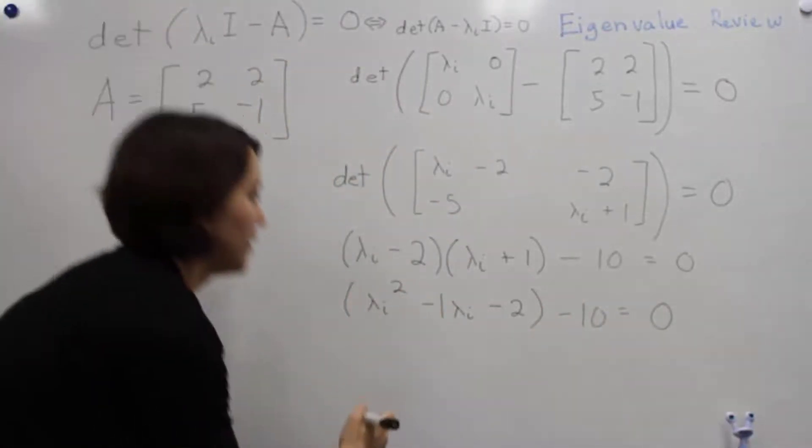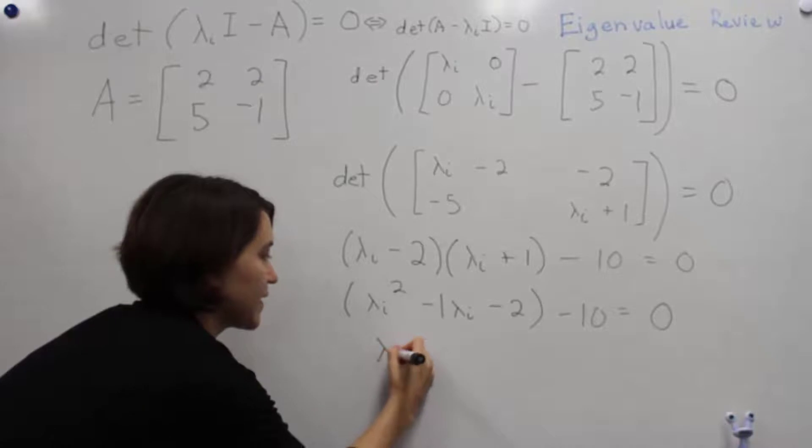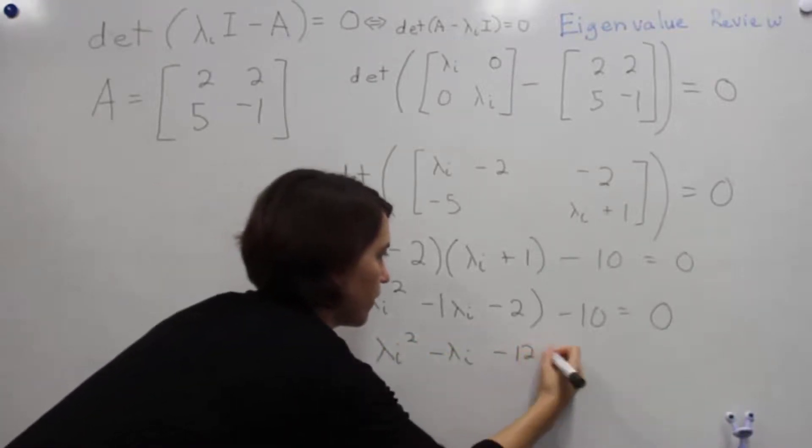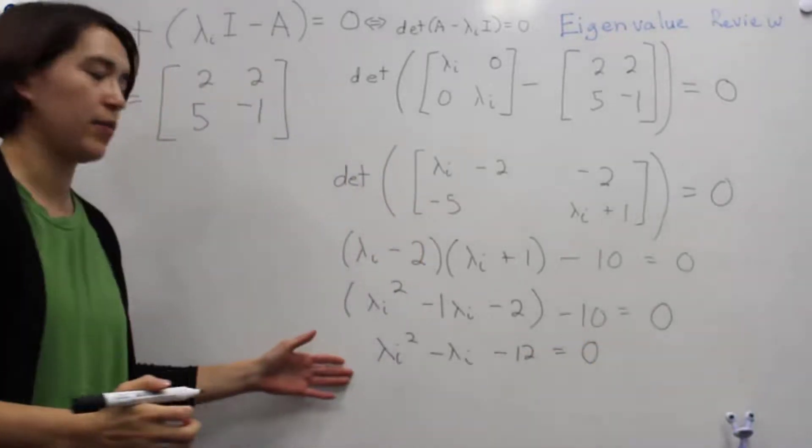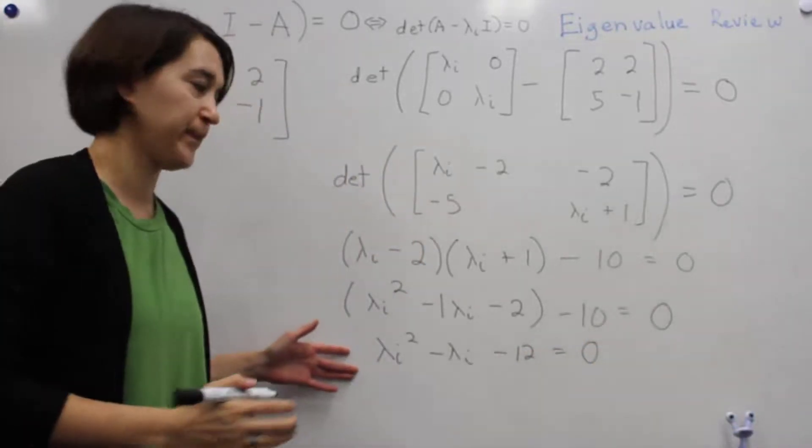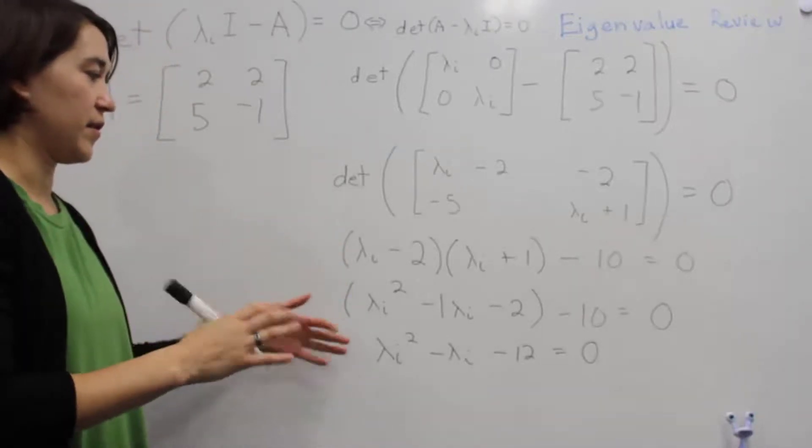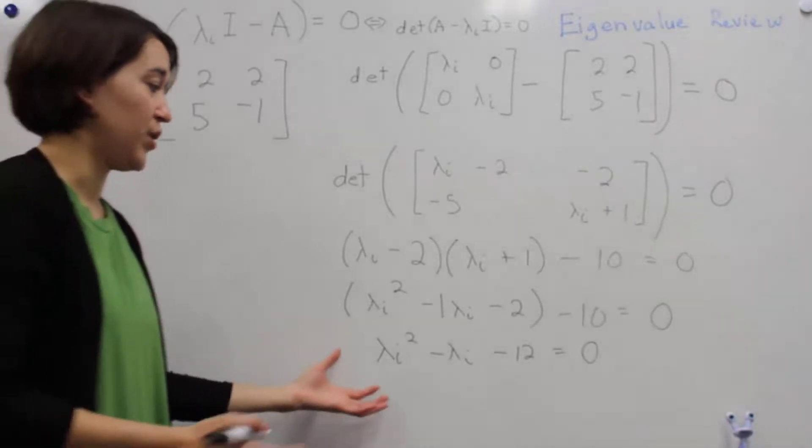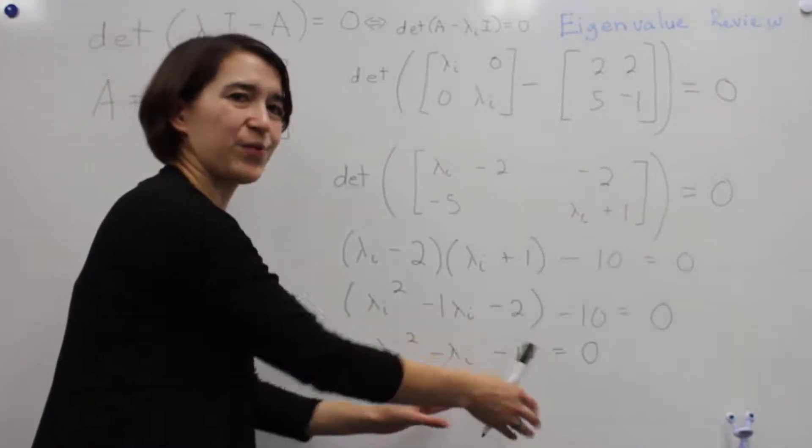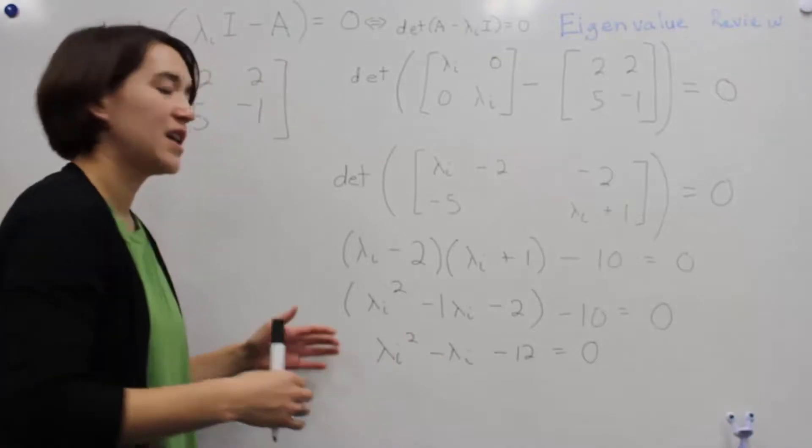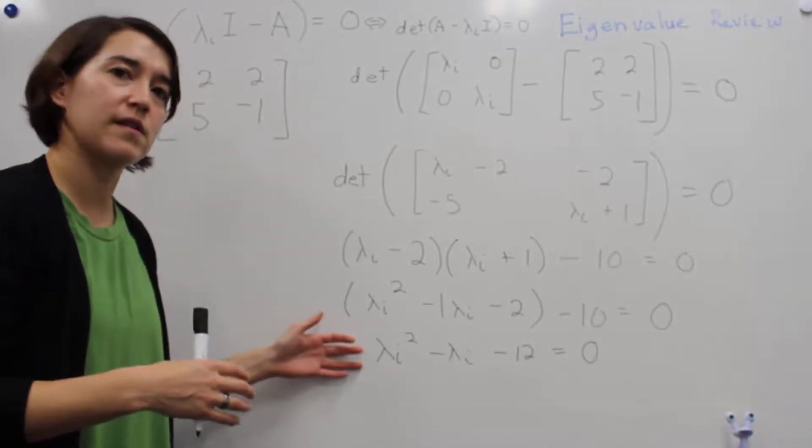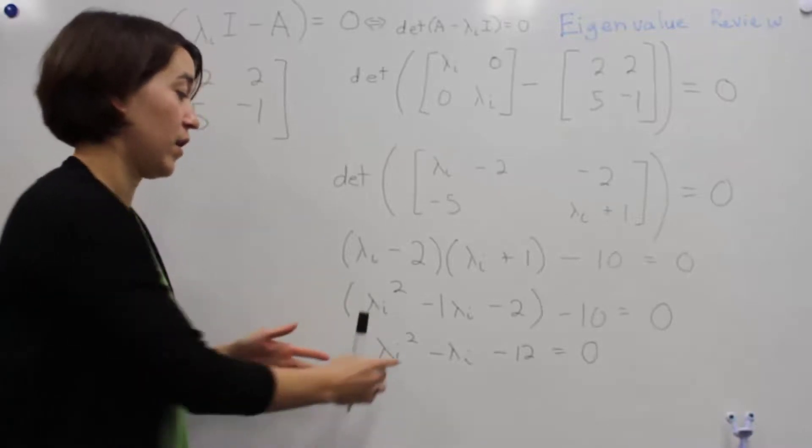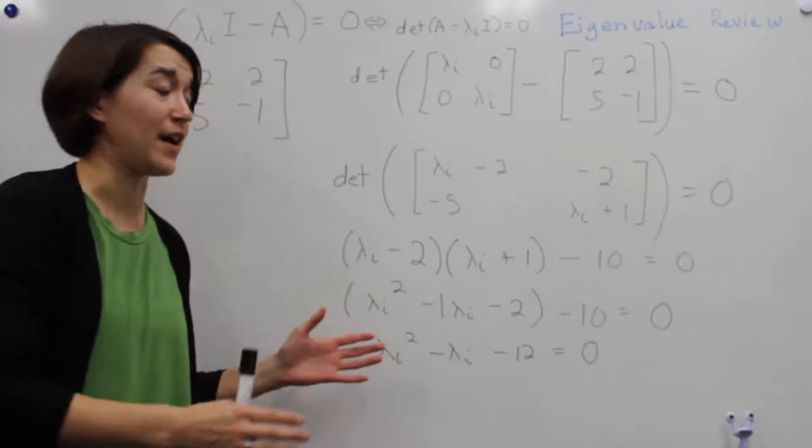Now we end up with this expression down here, and we want to figure out where we can go from here. Sometimes in nice equations like this one, you can figure out what this will break down into very easily. If you can't figure this out, you'll have to use the quadratic formula to figure out the values of these eigenvalues.